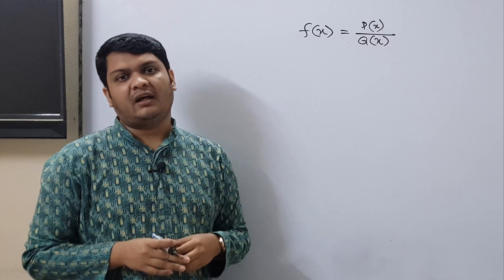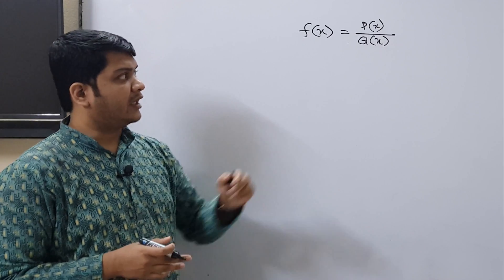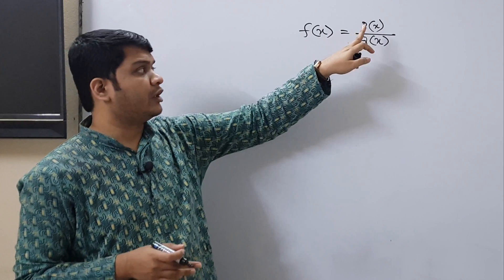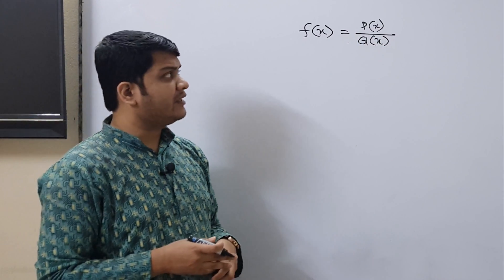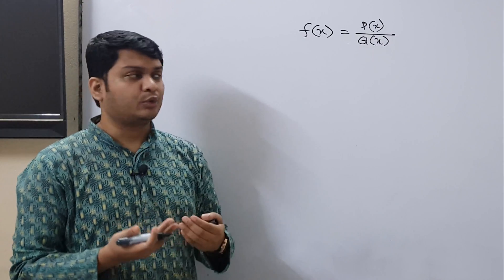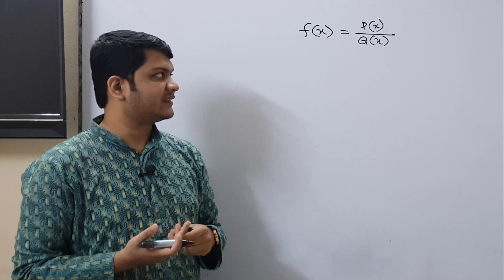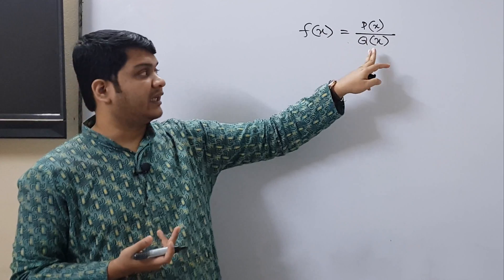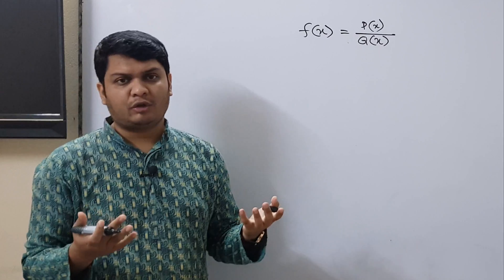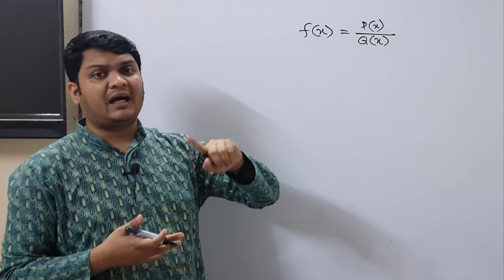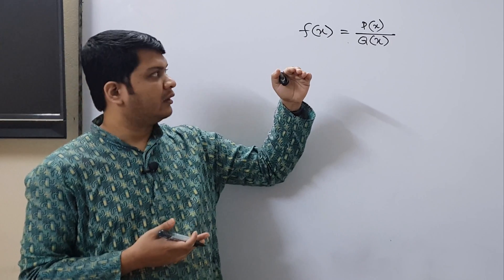There are three cases for infinite limits in rational functions. In the first case, the degree of p may be less than the degree of q. In the second case, the degree of p may be equal to the degree of q. And in the third case, the degree of p may be greater than the degree of q. The degree is the highest power of the variable in the polynomial.